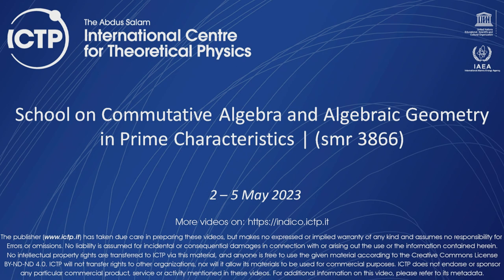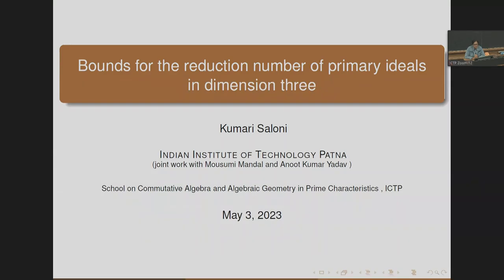Thank you for giving me this opportunity to present my work here. I'll be talking on bounds for the reduction number of primary ideals in dimension 3. The statements hold for higher dimensions as well, but it is more interesting in dimension 3. For dimension less than or equal to 2, results are already known.